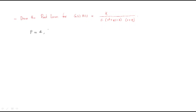The four poles are: the first pole is at 0; the second and third poles come from s squared plus 2s plus 2, which gives complex conjugate poles at minus 1 plus j1 and minus 1 minus j1; and the fourth pole is at minus 4. There are no zeros.